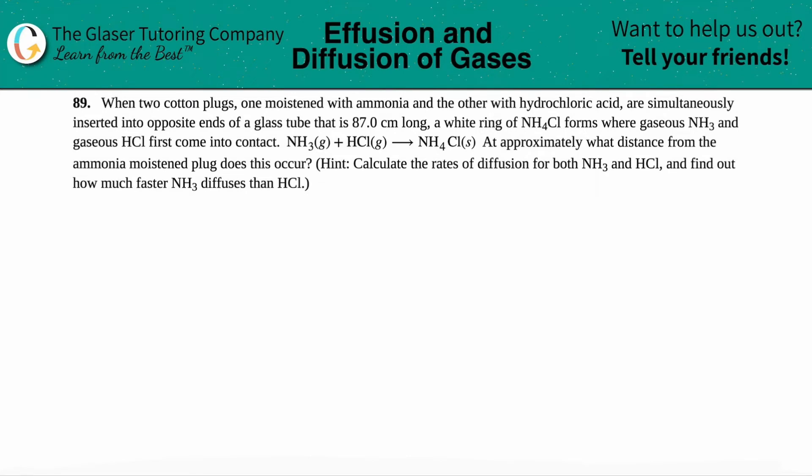Number 89. When two cotton plugs, one moistened with ammonia and the other with hydrochloric acid, are simultaneously inserted into opposite ends of a glass tube that is 87.0 centimeters long, a white ring of NH4Cl forms where gaseous NH3 and gaseous HCl first come into contact, giving us this balanced equation.